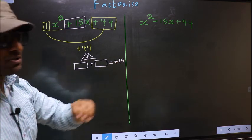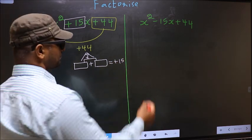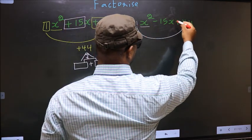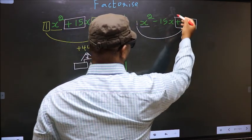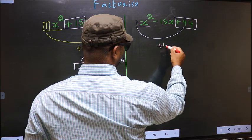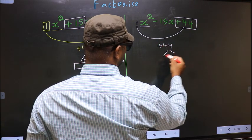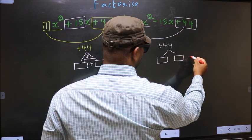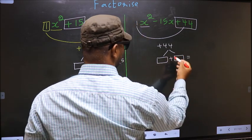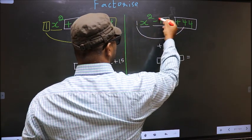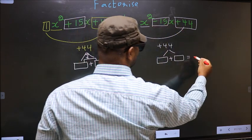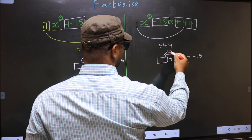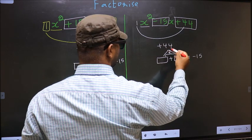Even over here, same: x² coefficient 1 multiplied by the constant plus 44, you get plus 44. Now look out for two numbers such that when you add them, you get the middle coefficient — here the middle coefficient is minus 15 — and when multiplied, you should get plus 44.